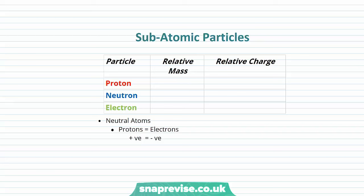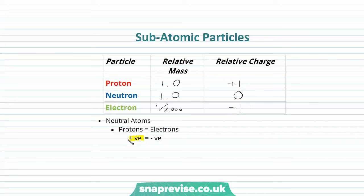Let's look at the relative charge. Our proton carries a positive charge — I like to remember it as P for positive. Our neutron carries a neutral charge, N for neutral. And our electrons carry a negative charge. Now if we take a look at the relative masses, both our protons and our neutrons have a relative mass of 1.0. Our electrons are tiny — they have a relative mass of 1/2000. It's important to note that in neutral atoms, the numbers of protons and electrons are equal, meaning the positive charge of the protons equals the negative charge of the electrons. This allows the atom to be overall neutral and carry no charge, so it's not an ion.